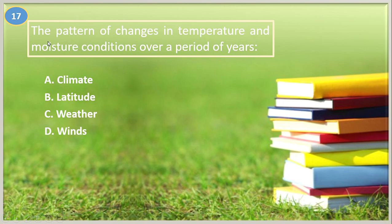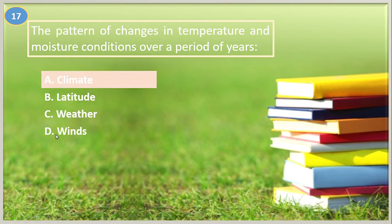Number seventeen. The pattern of changes in temperature and moisture conditions over a period of years is: A. Climate, B. Latitude, C. Weather, D. Winds. The answer is climate.